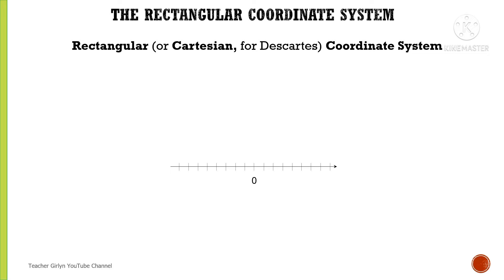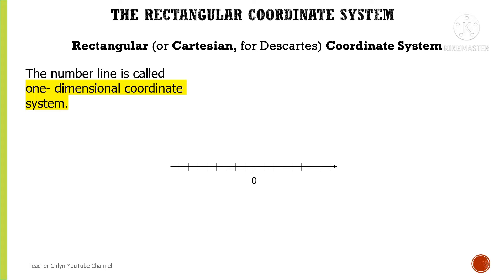First, let us go back to the concept of the Number Line. The number line is called a One-Dimensional Coordinate System. When we say coordinate, it is referring to location. Therefore, the number line has only one location — that is why it is called a One-Dimensional Coordinate System.